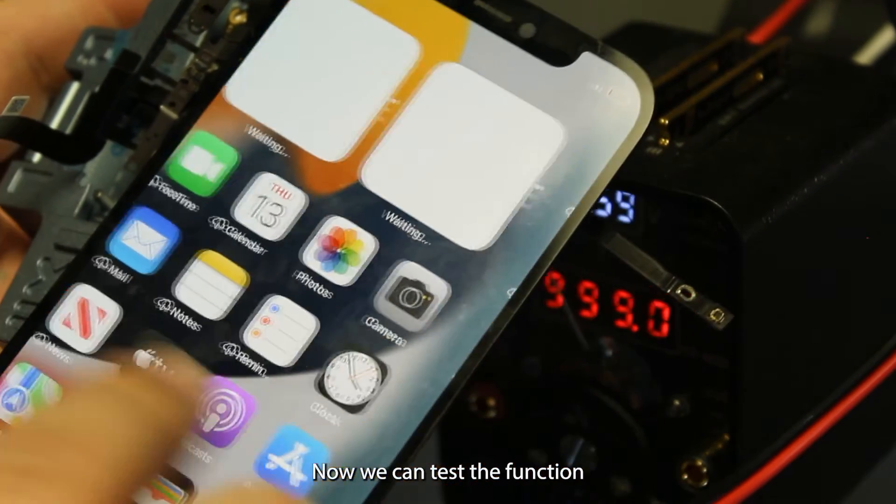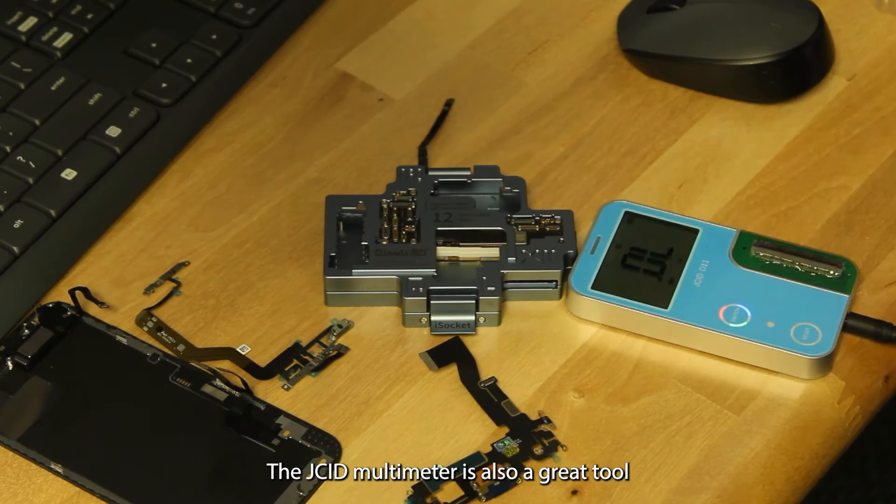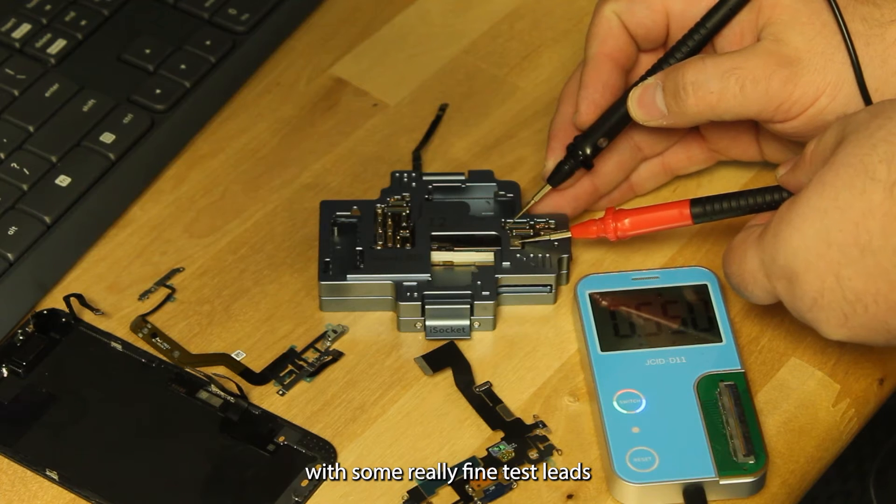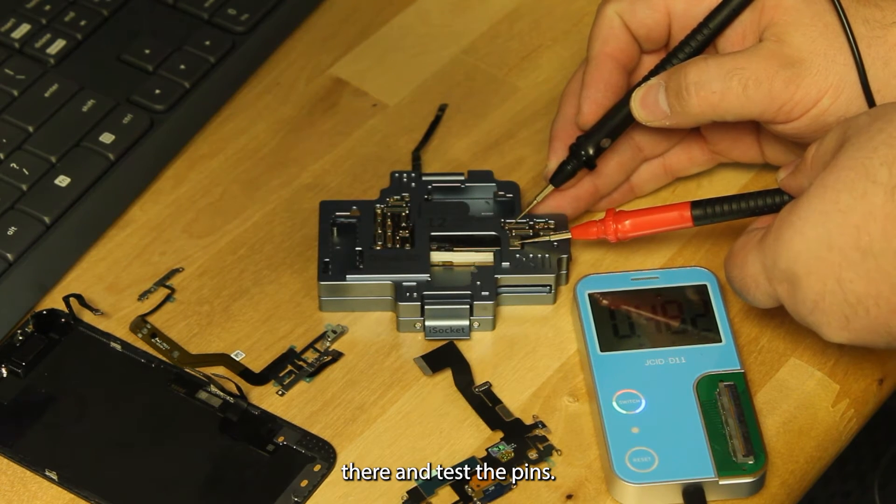Now we can test the function and see if there's anything missing. The JCID multimeter is also a great tool with some really fine test leads that allow us to get down in there and test the pins.